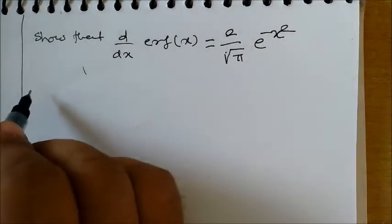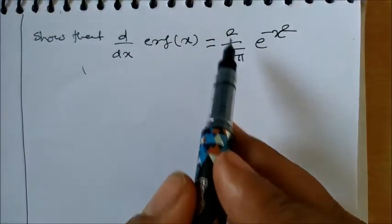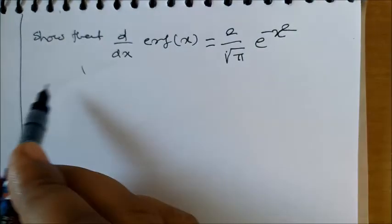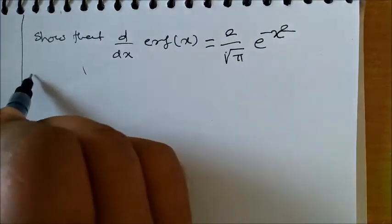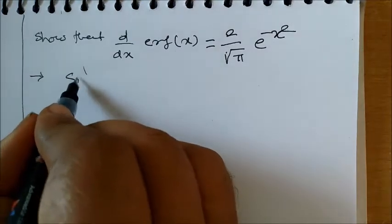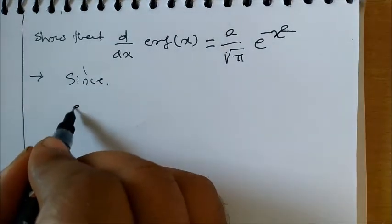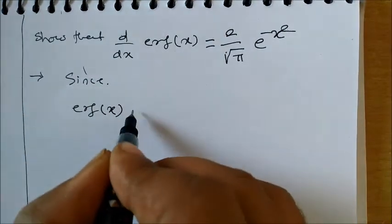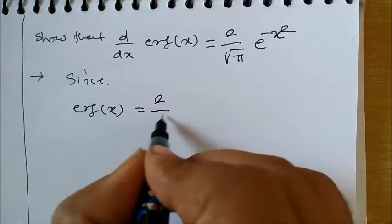Let's take the solution. We will take the first definition of error function. Solution: Since erf(x) = (2/√π) ∫₀ˣ e^(-u²) du